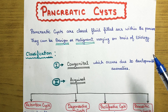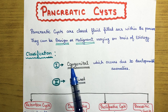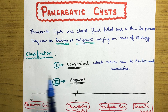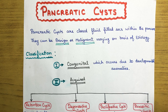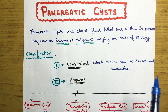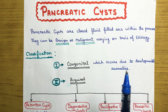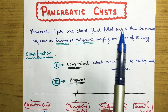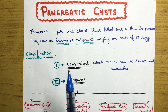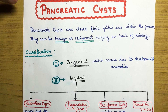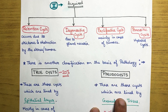We can classify them in various types. The main classification is congenital or acquired. Congenital means something we get by birth — a newborn is born with it due to some developmental anomalies. Acquired is something that we acquire over the course of our lifetime.